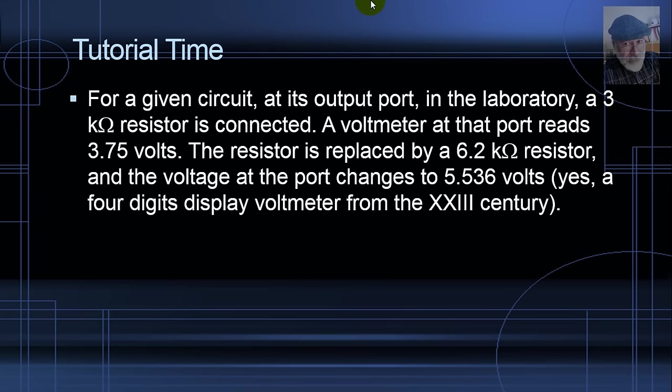Tutorial time. Let's say we have a circuit and at the output port of that circuit in the lab, we connect a 3 kΩ resistor. A voltmeter at that port reads 3.75 volts. The resistor then is replaced by a second resistor with a value of 6.2 kΩ, and the voltage at that port changes to 5.536 volts. The question is, of course, find the Thevenin and Helmholtz equivalent.